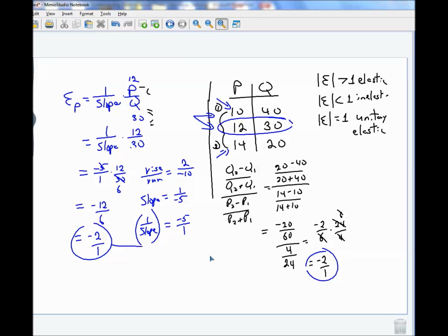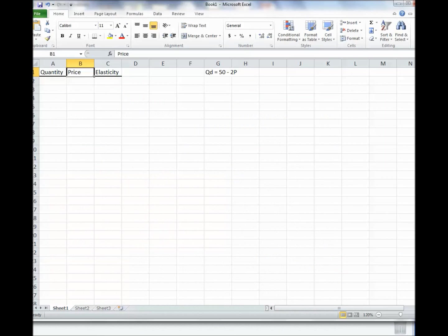It turns out that point elasticity, dead square in the middle of an arc, is exactly the same thing. All right. So you should practice a few of these, and then you should interpret them as elastic, inelastic, or unitary elastic. Now I think I'm going to try the same thing, except now in Excel. So let's see if we can get over to Excel.